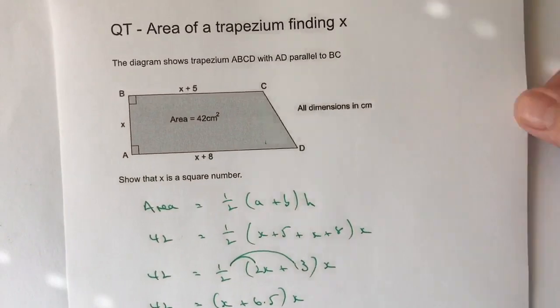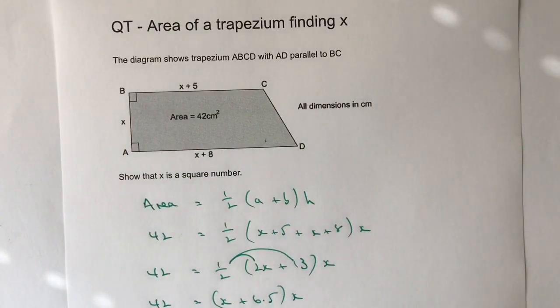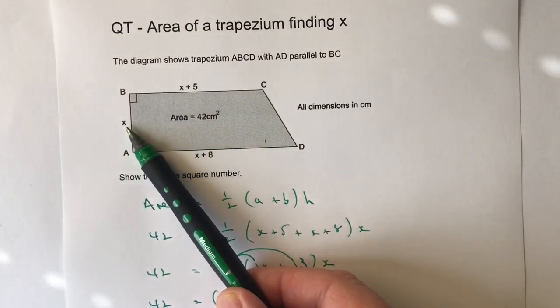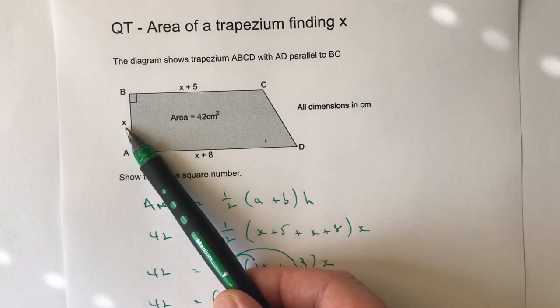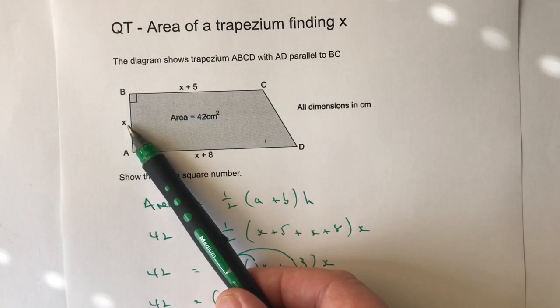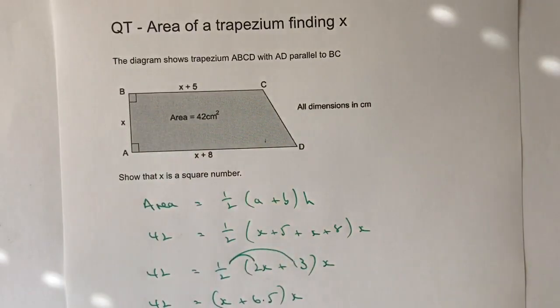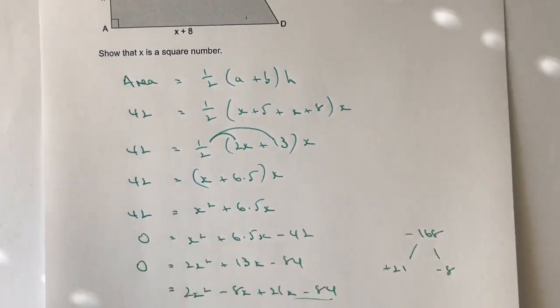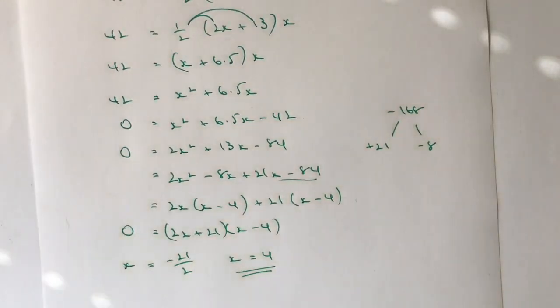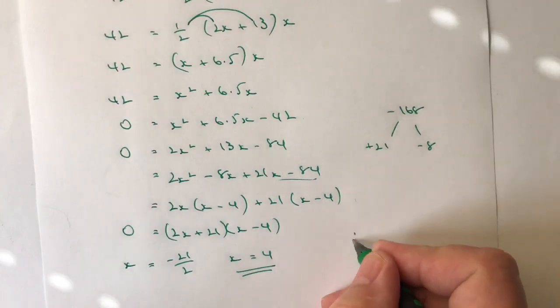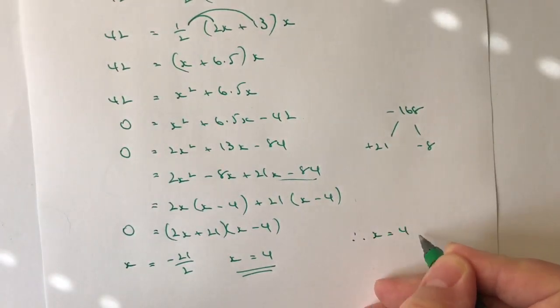So if I go back to my actual trapezium, this value here has to be a value of 4. It can't be a value of minus 21 over 2 or minus 10 and a half because that is just something that we use to make calculations a little bit easier. So in this particular question, the value of x equals 4.